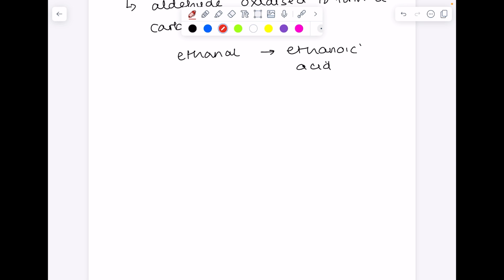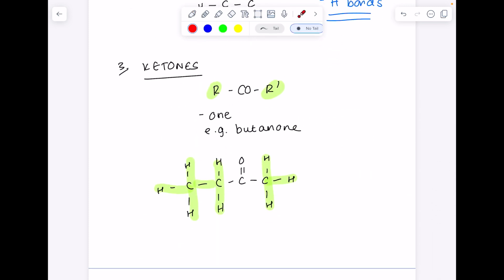Well, the Ag plus ions in that silver nitrate are reduced to just plain metallic silver, hence the silver mirror. If you consider the functional groups, you can't oxidize the ketone to a carboxylic acid, hence why you don't see a silver mirror.